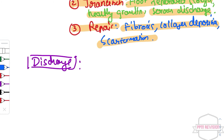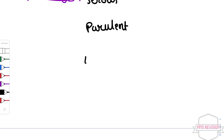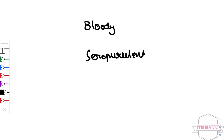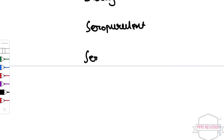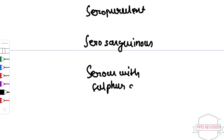Looking at discharge types in an ulcer: there is serous, purulent, bloody, seropurulent, serosanguinous, serous with sulphur granules, and yellowish discharge.